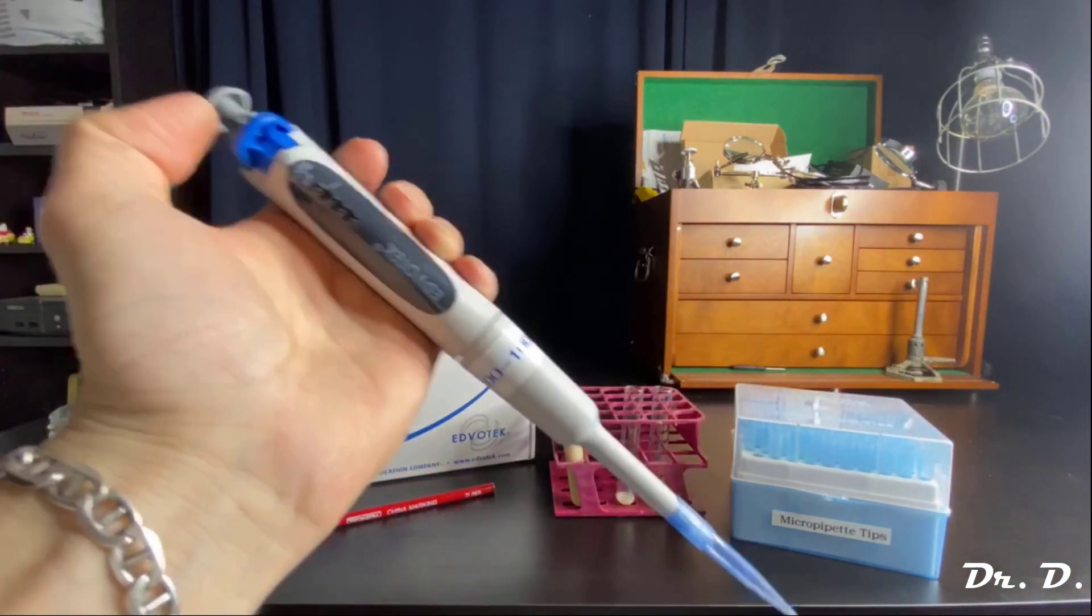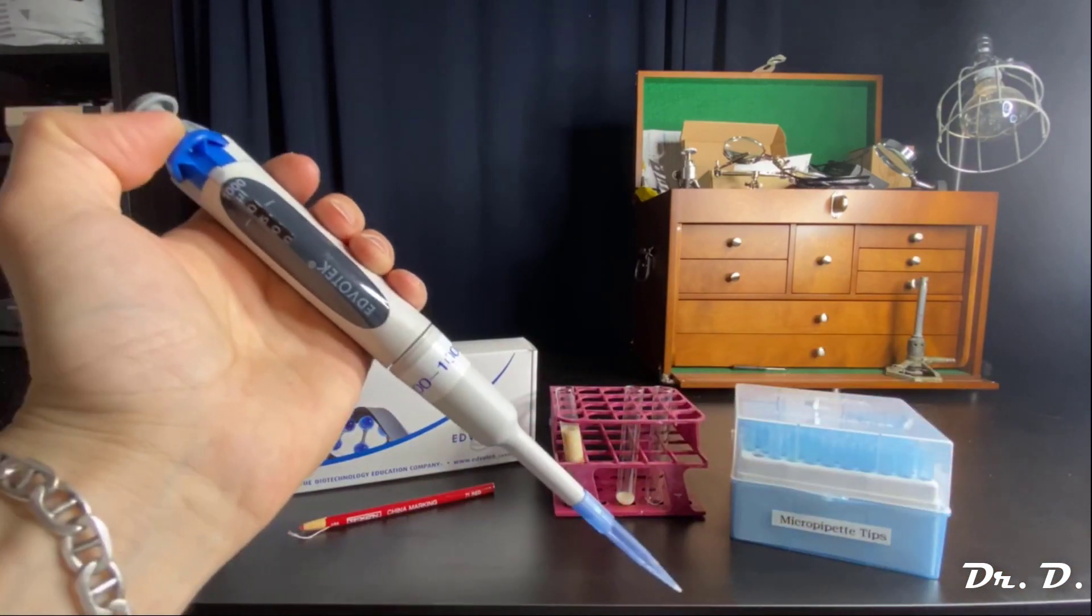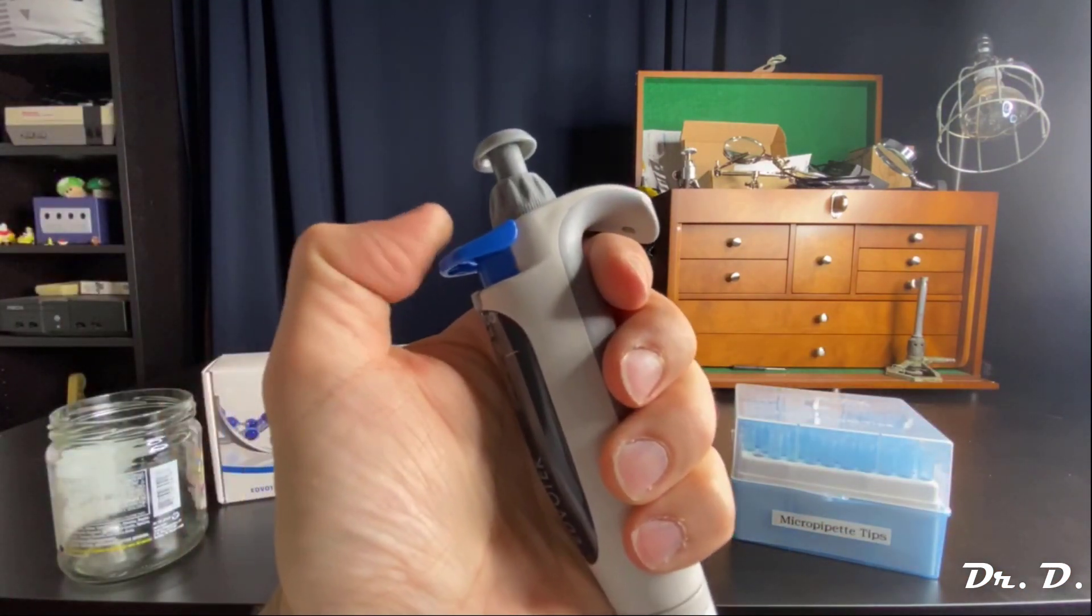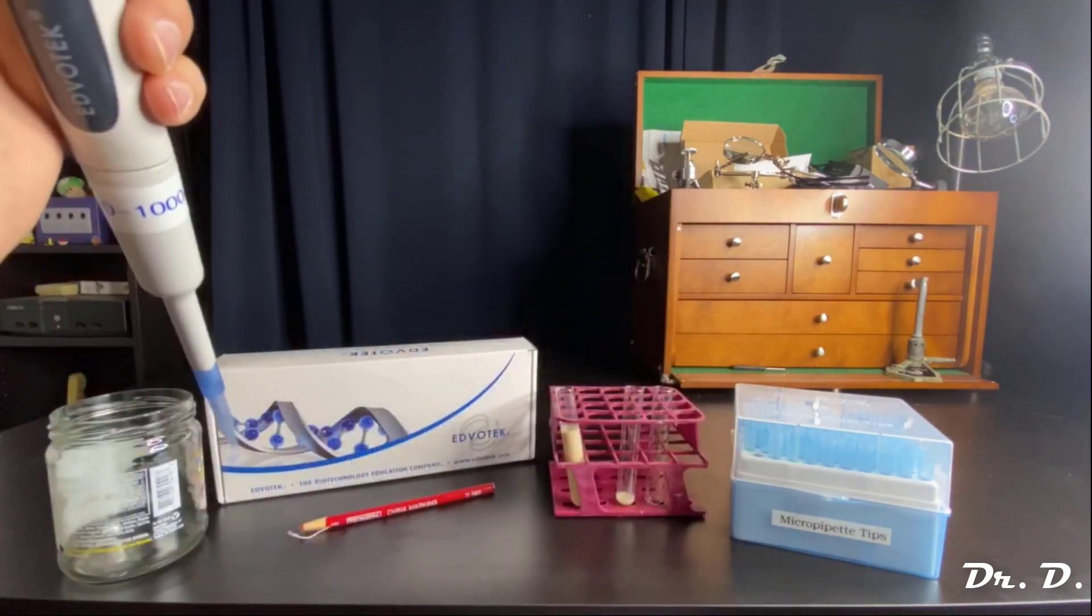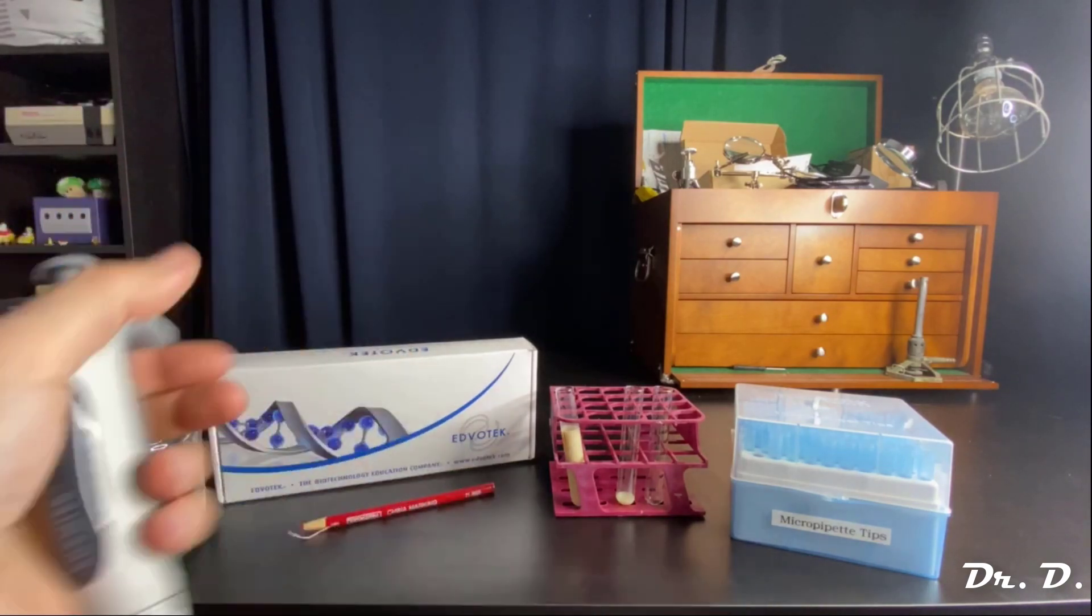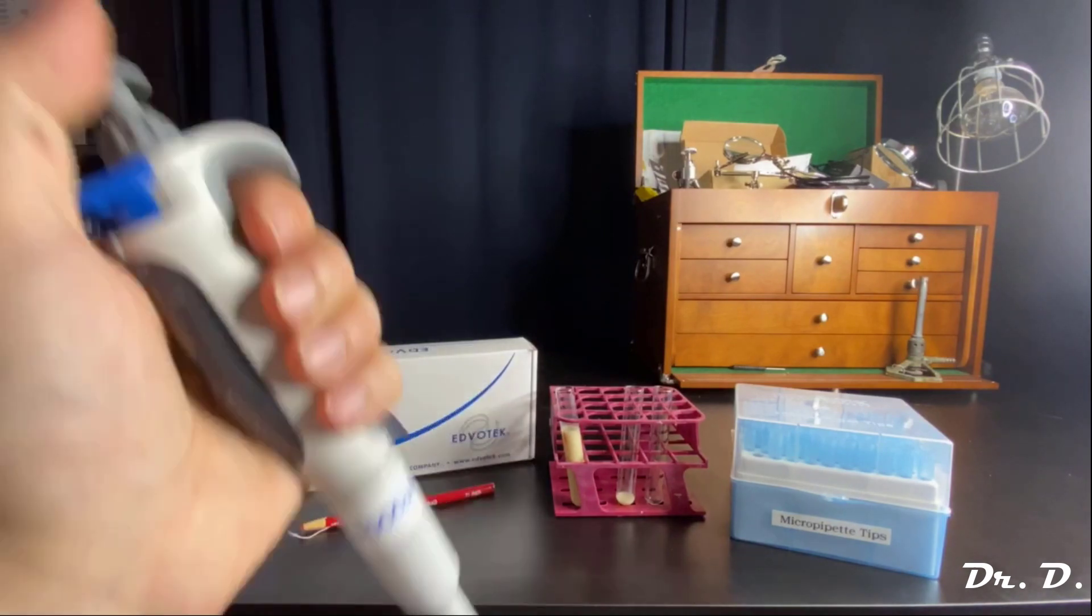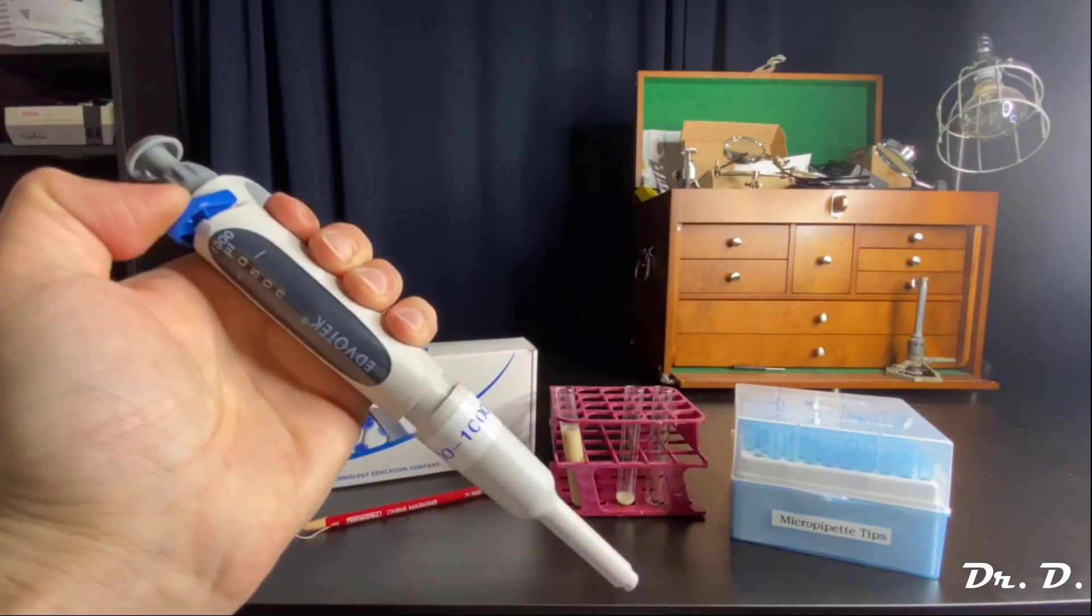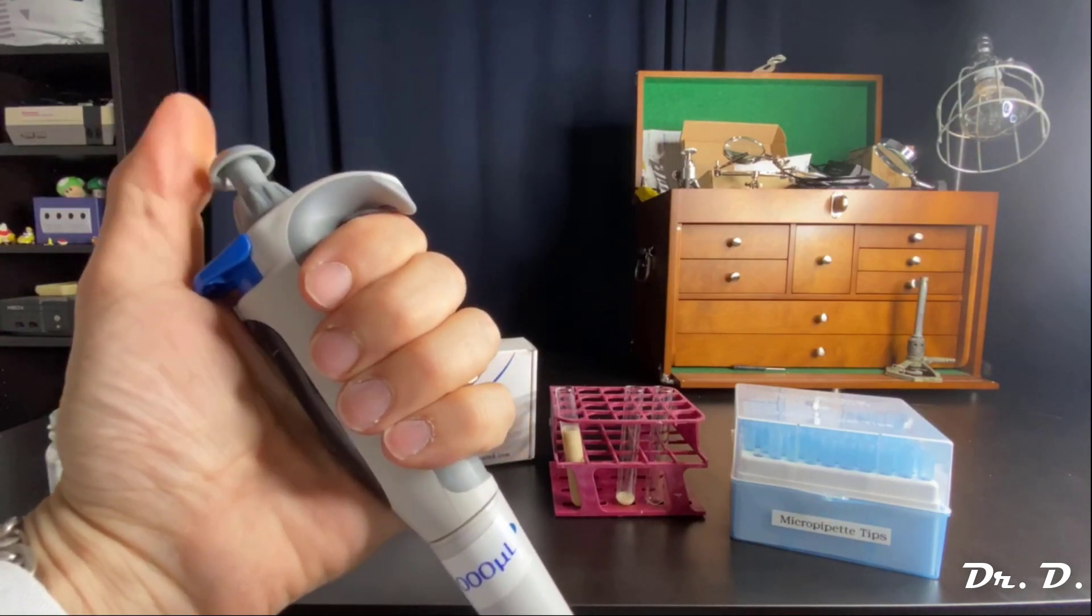Now, once I've used the tip, I no longer want to use that tip. So I'm going to use the ejector button. This blue button is called the ejector. And I'm going to use the ejector button to eject my tip into a receptacle. I'm just using this glass bowl here. But you will have your own trash receptacle. And the blue button is for ejecting tips.